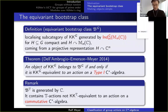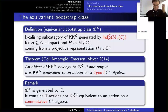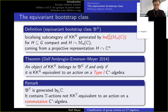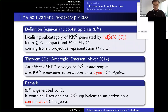This might remind you of a result where without the group G, one characterization of the bootstrap class is things KK-equivalent to something commutative — but that definition doesn't work in the equivariant case. If your group G is the circle group T, the bootstrap class is already generated by just the complex numbers. But there is an example by Heath Emerson of a circle action in this bootstrap class which is not KKT-equivalent to any action on a commutative C*-algebra. So you must use type-one C*-algebras, not commutative ones.